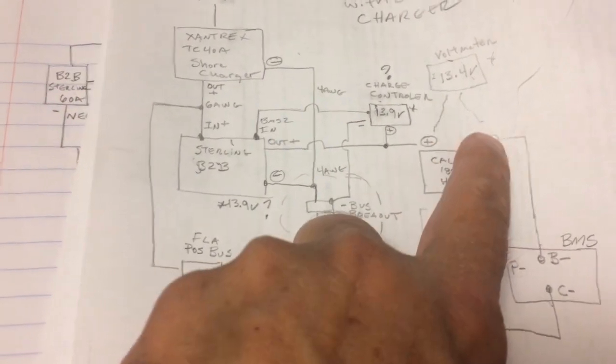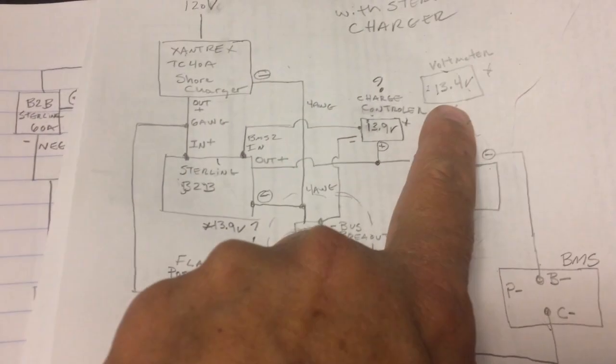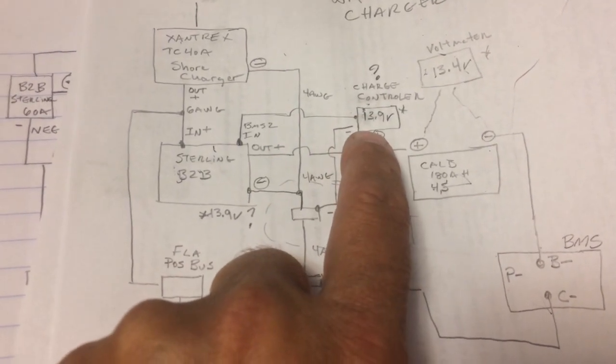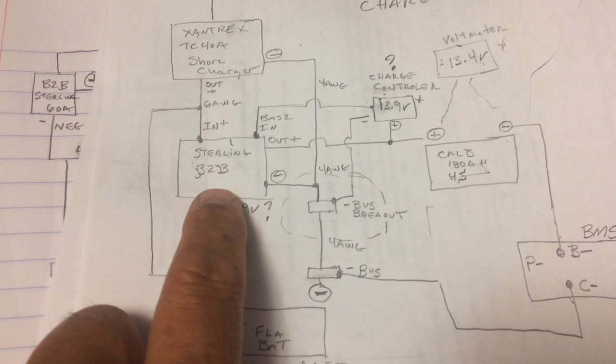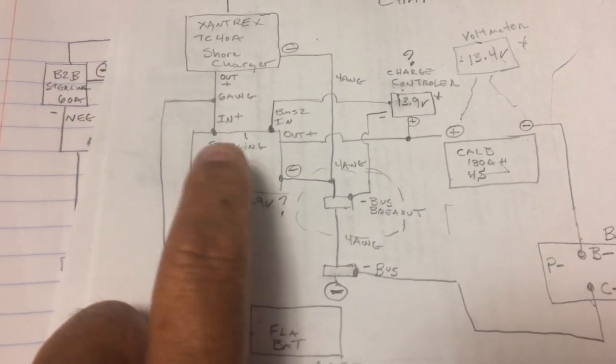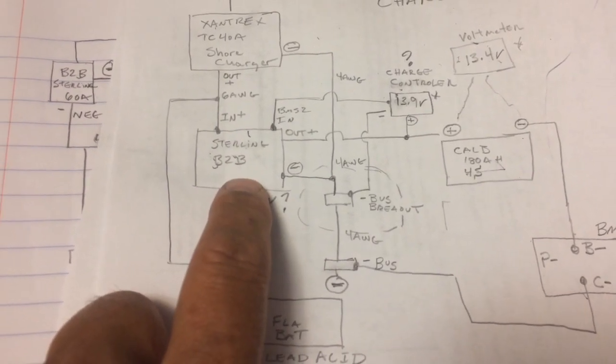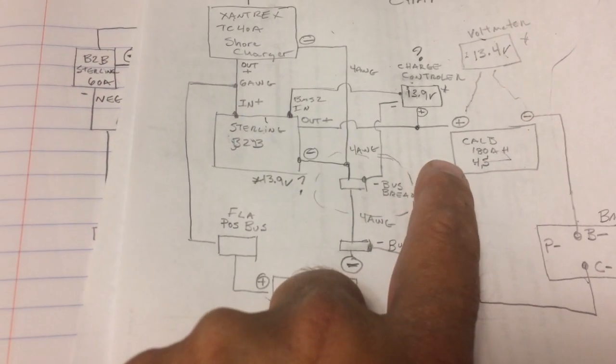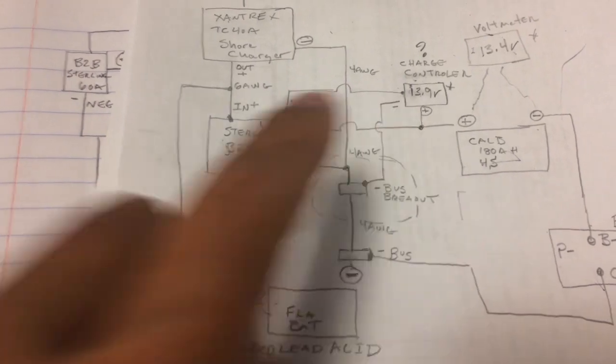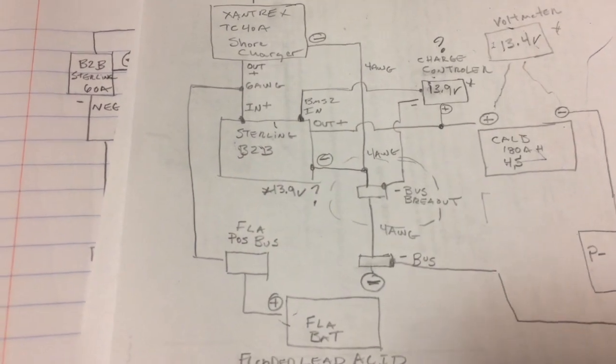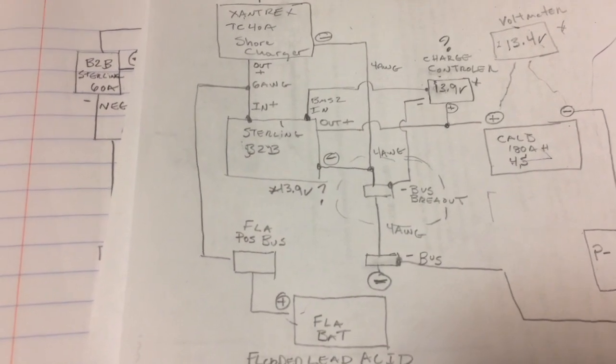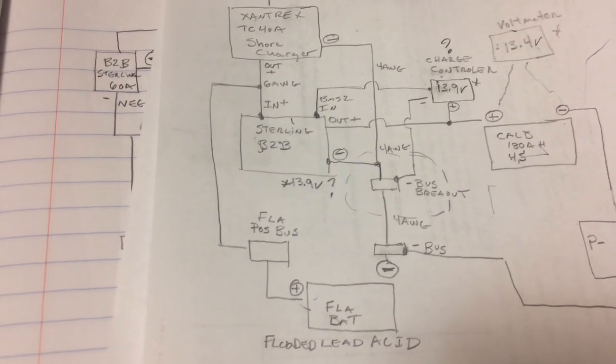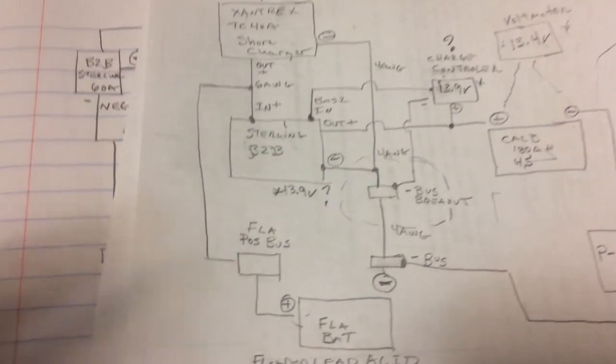My terminal voltages were reading 13.4 and my charge controller voltage in my Sterling, which is really important—the Sterling needs to know what the battery terminal voltage is so it can charge the battery—it had all this high voltage and really weird floating voltage depending on how much current I was pushing. The weirder the voltage got.